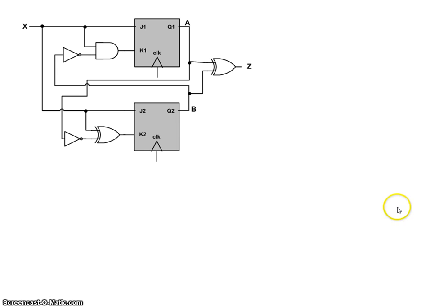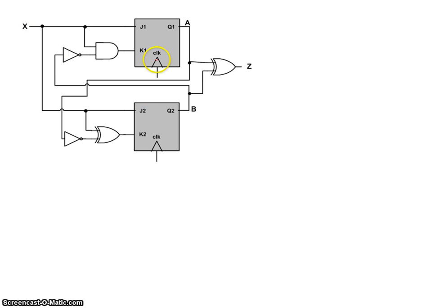In this particular problem, we have our circuit with a JK flip-flop and inputs to the JK. The input to the system is called X, and we have output Z. We also have J1, K1, J2, and K2. So let's come up with the expression for J1.